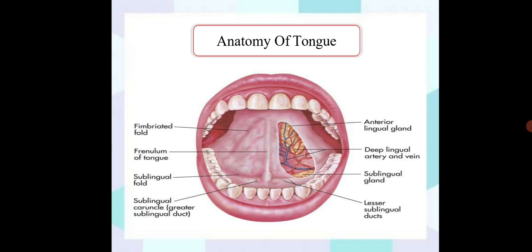You can see that blood supply with the presence of the lingual glands. Those glands we will discuss in second semester digestive system. There are three types of glands present which have specific functions, secreting certain kinds of secretions, which may be mucus or serous. Here you can see the anterior lingual gland, deep lingual artery and the veins, sublingual gland and the lesser sublingual glands with the sublingual folds.